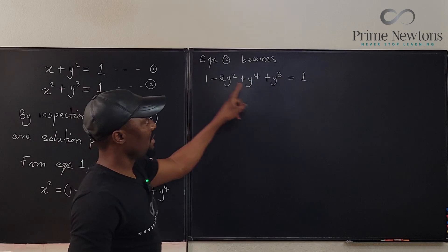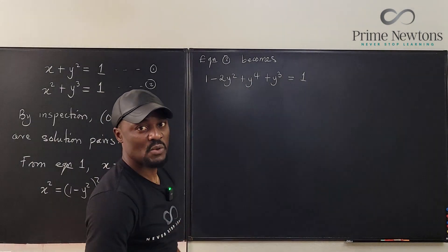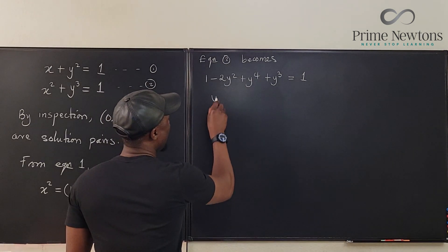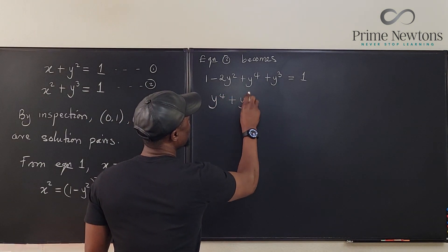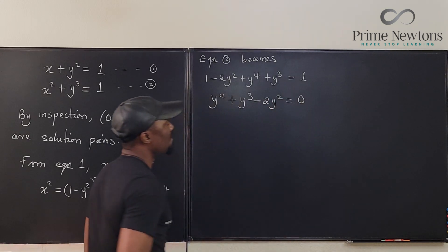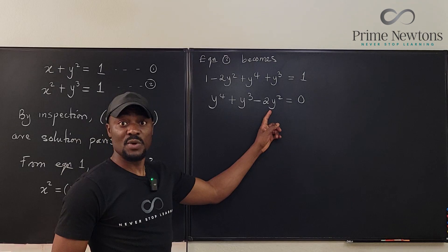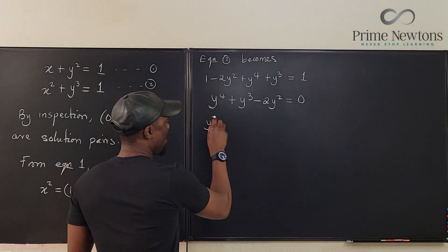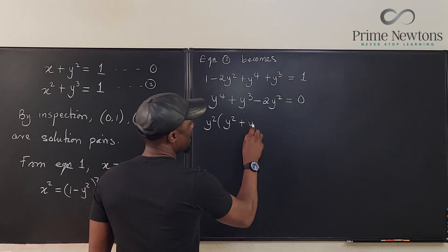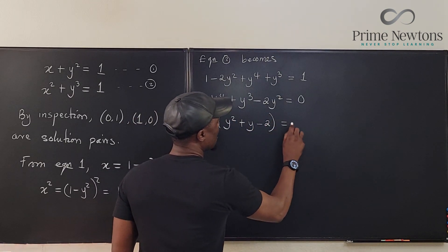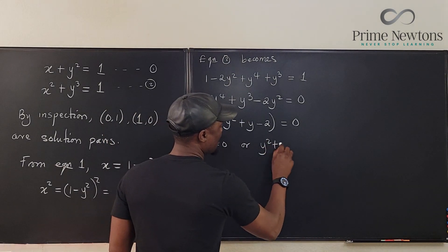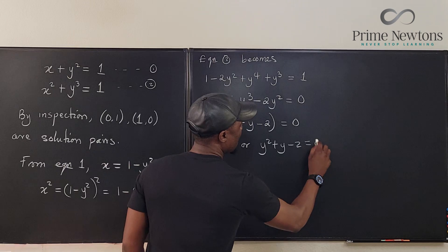There's a one on the left and a one on the right, so subtract one from both sides — we don't need to deal with it anymore. What we have is y to the fourth plus y cubed minus two y squared equals zero. We can see that y squared is common to all terms, so we factor: y squared times (y squared plus y minus two) equals zero.